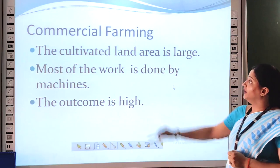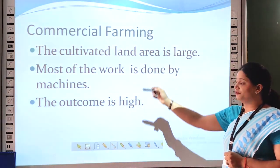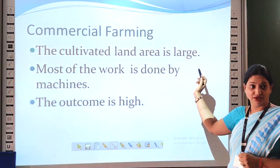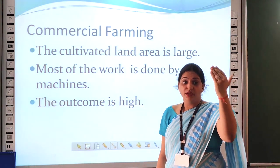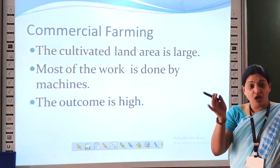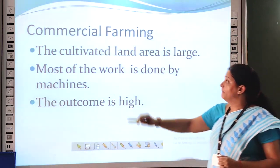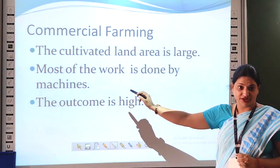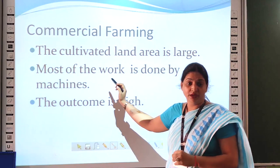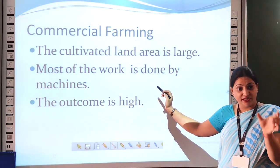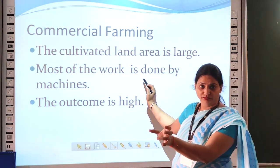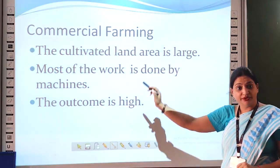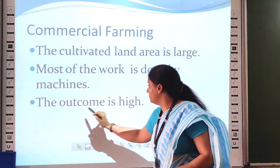Now, these are the features of commercial farming. The first one is that the cultivated land area is large. In subsistence farming, farmers have very small and scattered land areas, but in commercial farming they have a very large area of land. Most of the work is done by machines. In subsistence farming, farmers do not have facilities to irrigate the land, but in commercial farming they have new techniques for irrigation. The outcome is high.